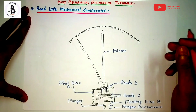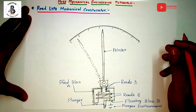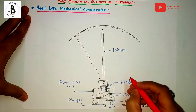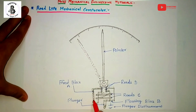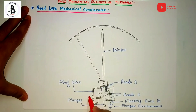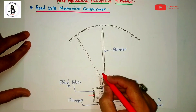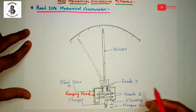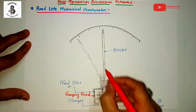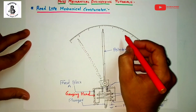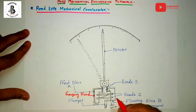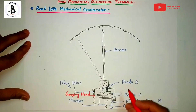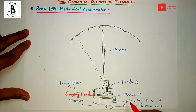Now let us see the theory of reed type mechanical comparators, starting with the construction and working. In the reed type mechanical comparator, the gauging head is usually a sensitive, high quality dial indicator. The dial indicator is mounted and supported by sturdy columns. Just you can see the construction of the reed type mechanical comparator.